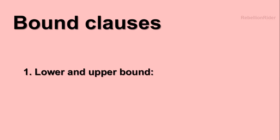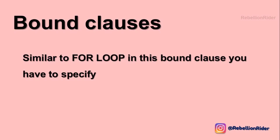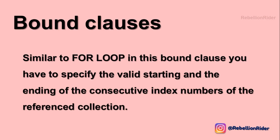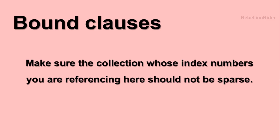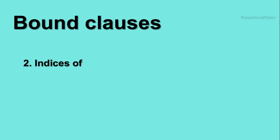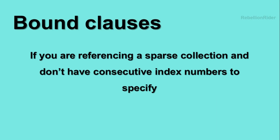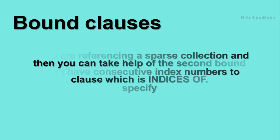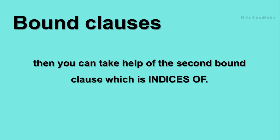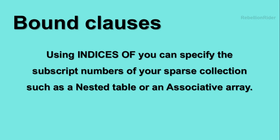The first is lower and upper bound. Similar to a FOR loop, in this bound clause you specify the valid starting and ending consecutive index numbers of the referenced collection. Make sure the collection whose index numbers you are referencing is not sparse. If your collection is sparse, you may want to use the second option, INDICES OF, which lets you specify the subscript numbers of a sparse collection such as a nested table or an associative array.